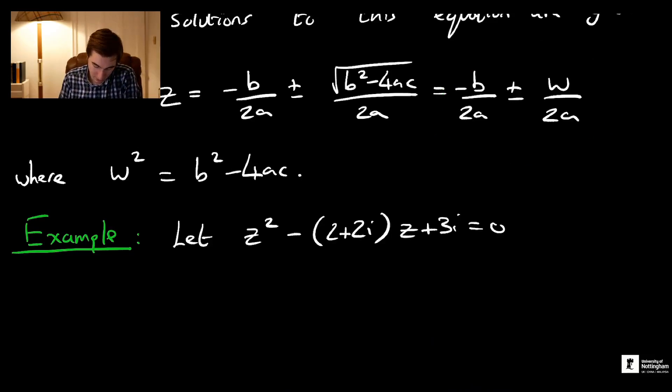w² is defined to be b² - 4ac. So what is b²? Well, that's this whole thing squared. I can take that minus sign out because when I square a negative number, it's positive. So I get (2+2i)² minus 4 times a, which is 1, times c, which is 3i.